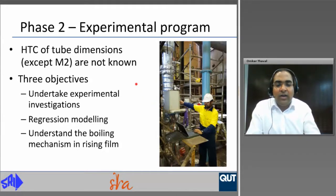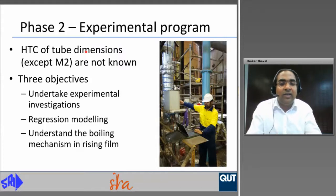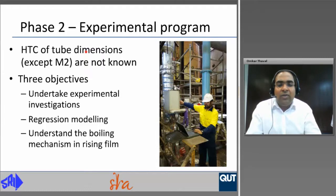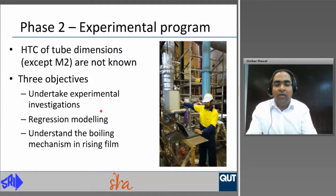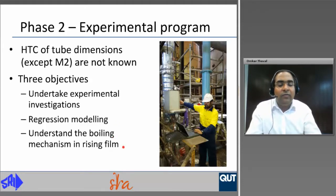Phase one addressed capital cost, but what about performance? The heat transfer coefficients of all tube dimensions discussed in phase one, except for M2, are not known. The three main objectives of phase two are: undertake experimental investigation for all tube dimensions mentioned in phase one, develop a regression model for heat transfer coefficient and optimum juice level, and understand the boiling mechanism in rising flame evaporators.